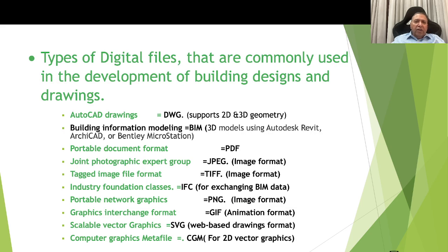The types of digital files commonly used in the development of building design and drawing functions include: AutoCAD drawings (DWG), supporting 2D and 3D geometry; Building Information Modeling (BIM) 3D models using Autodesk Revit, AutoCAD, ArchiCAD, and Bentley MicroStation; PDF for storing drawings; JPEG (JPG); TIFF (Tagged Image File Format); Industry Foundation Classes (IFC) for exchanging BIM data; PNG (Portable Network Graphics); GIF (Graphic Interchange Format), primarily an animation format; SVG (Scalable Vector Graphics) for web-based drawings; and CGM (Computer Graphics Metafile) for 2D vector graphics.